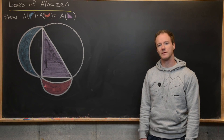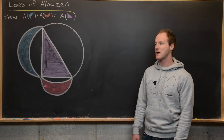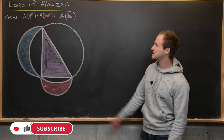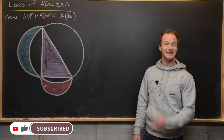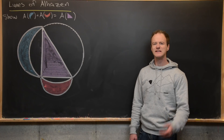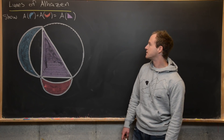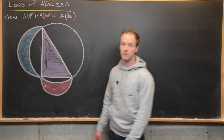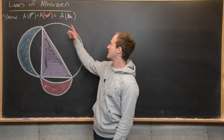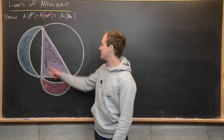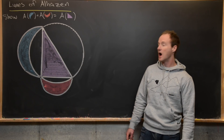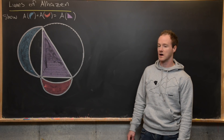Here we're going to look at a classic problem from Islamic mathematics, from around the year 1000. It has to do with things called the Lunes of Al-Hazan. We have a right triangle inscribed inside of a circle — specifically, this circle is the circumcircle of this right triangle.